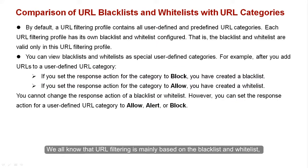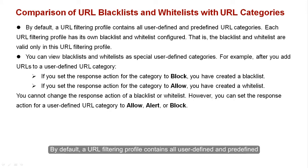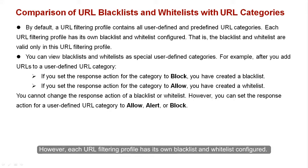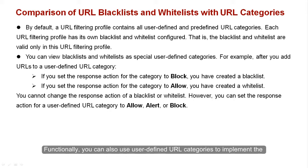URL filtering is mainly based on the Blacklist and Whitelist, User-Defined URL Category, and Pre-Defined URL Category. By default, a URL filtering profile contains all User-Defined and Pre-Defined URL Categories. However, each URL filtering profile has its own Blacklist and Whitelist configured — that is, the Blacklist and Whitelist are valid only within that specific URL filtering profile.